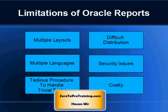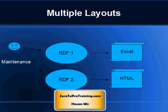Now we will talk about the limitations of Oracle Reports that are overcome by BI Publisher. If you wish to publish data from a report in multiple formats — for example, in both an Excel and HTML layout — then you must prepare multiple RDF files. This creates maintenance issues, as bug fixes will have to be applied to all RDF files.